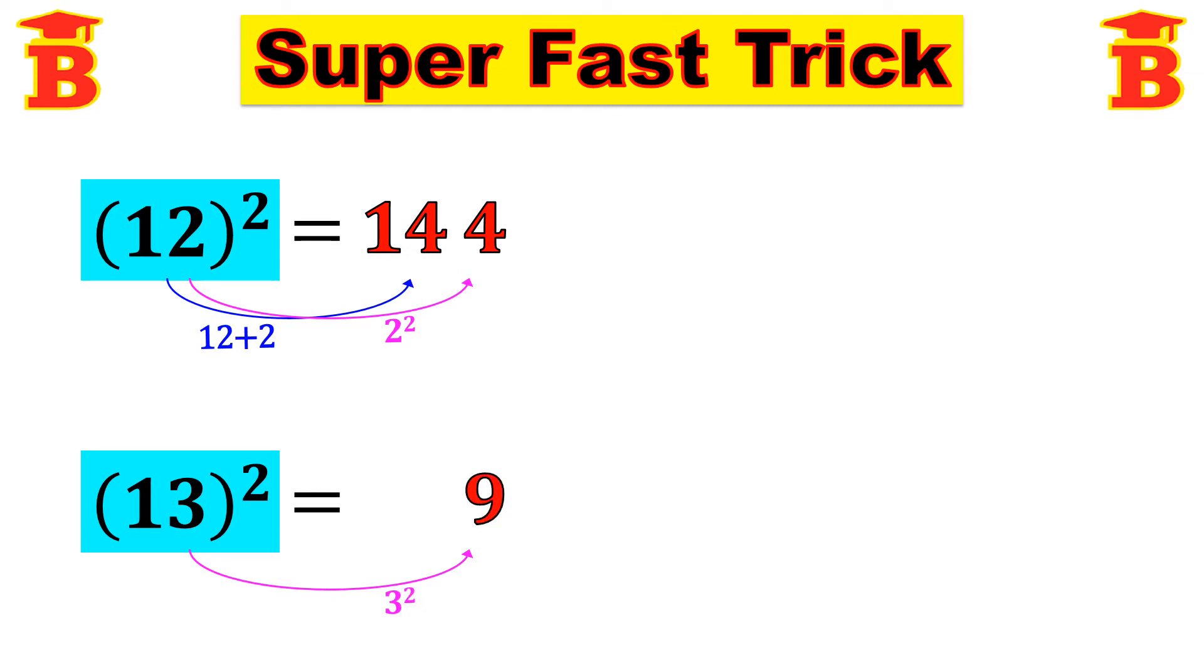Next take the given number 13 and add with the last digit 3. So 13 plus 3, that is 16. So we get 169. Therefore 13 square is 169.